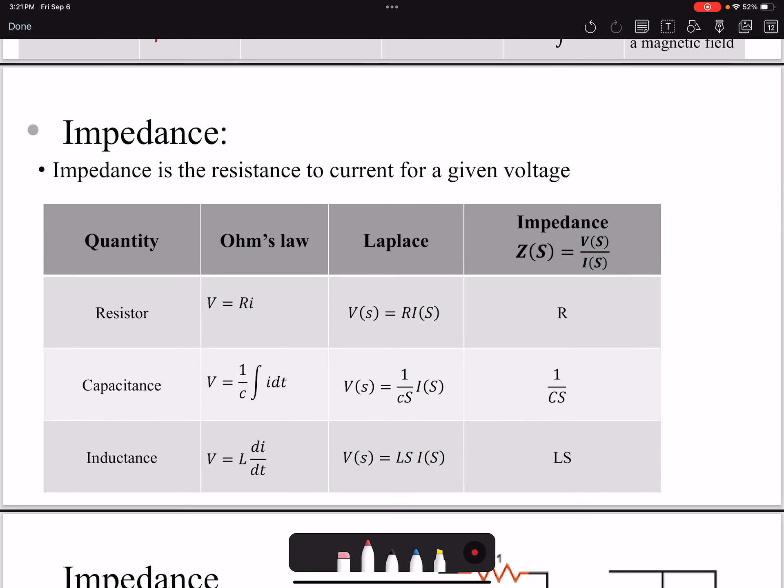We are also introducing the concept of impedance. That's the resistance to current. If you look at the Ohm's law, the higher the value, the lower current you're going to have for a given voltage. So in Laplace domain, we define the impedance as V(s) over I(s). For the capacitance, the impedance value would be 1 over Cs, and for inductance you have Ls.